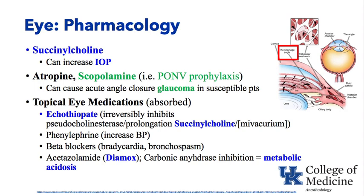Succinylcholine increases intraocular pressure and does so very temporarily. Some of our other drugs can cause problems — atropine and scopolamine can cause acute angle closure glaucoma in susceptible patients.